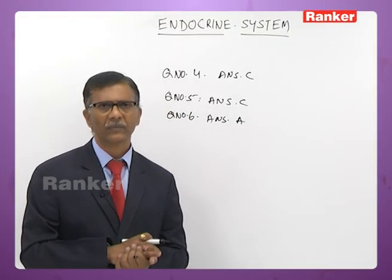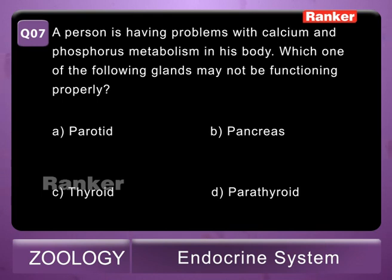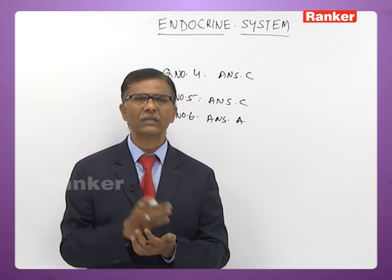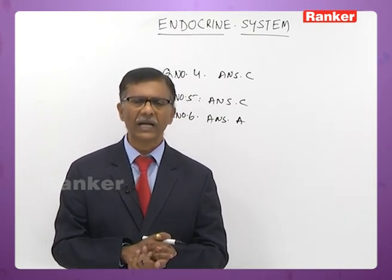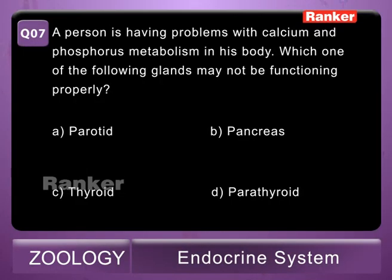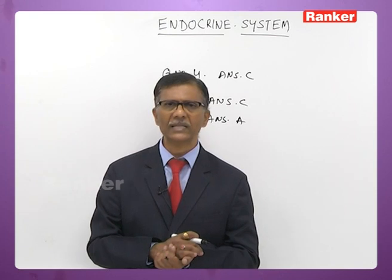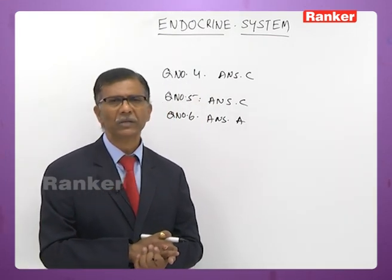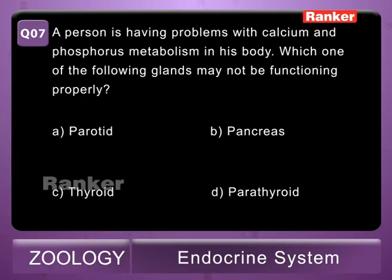Seventh question: a person is having problems with calcium and phosphorus metabolism. Which gland may not be functioning properly? Options: A - parotid gland, B - pancreas, C - thyroid, D - parathyroid. Calcium and phosphorus metabolism are under the control of parathormone (also known as Colip's hormone), secreted by the parathyroid gland. Parotid is a salivary gland, not endocrine. Seventh question answer is D — parathyroid.